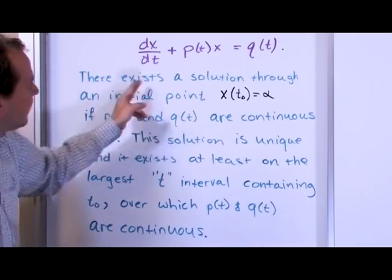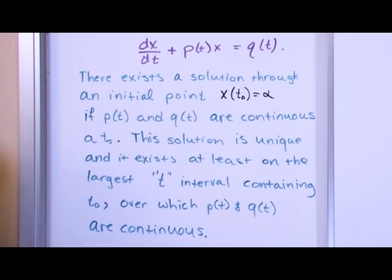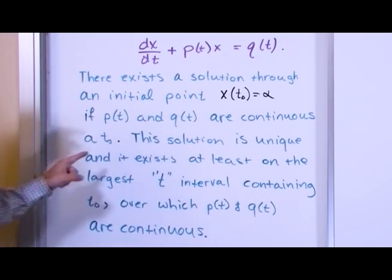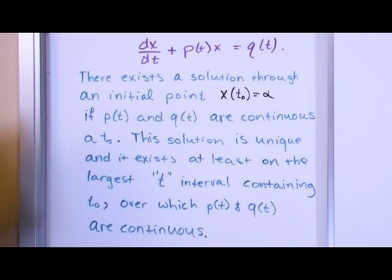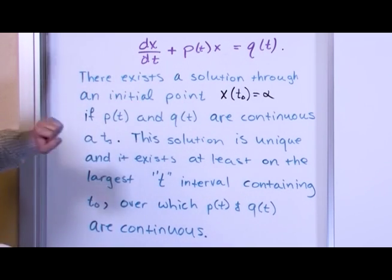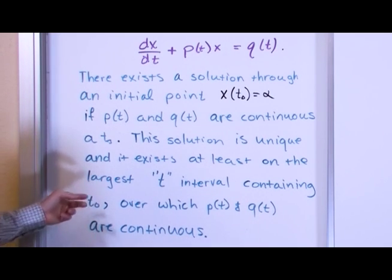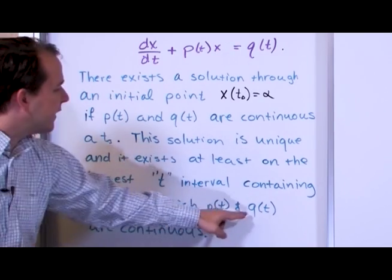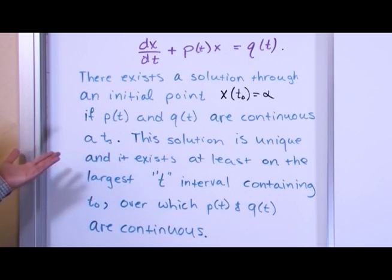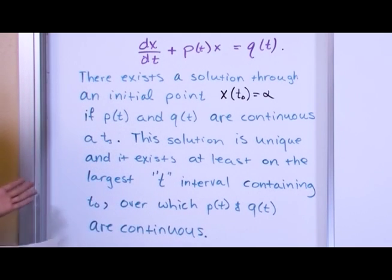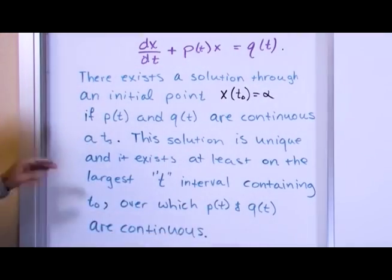So to catch up: there exists a solution through the initial condition if p and q are continuous at the initial time — and usually they are. This solution is unique, and it exists on the largest t-interval containing t-naught over which these functions are continuous. If there were a discontinuous jump in p or q, as long as my initial time was in the continuous region, I can find a solution there.